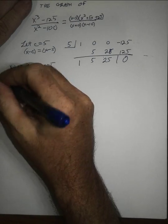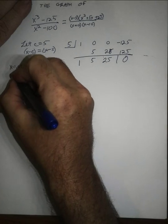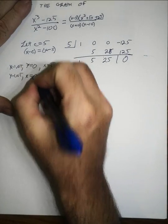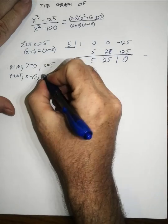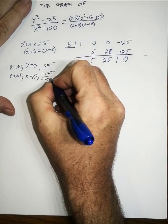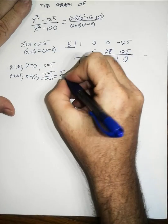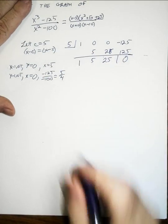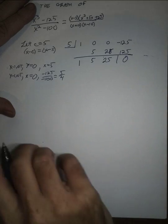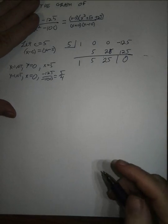We can also quickly calculate the y-intercept by setting x equal to 0. That gives us negative 125 over negative 100, which equals 5/4 or 1.25. So we've now found two key intercepts: (5, 0) and (0, 5/4).